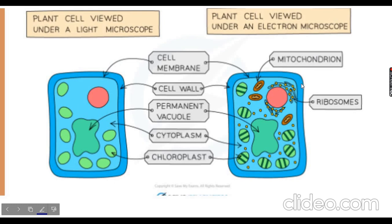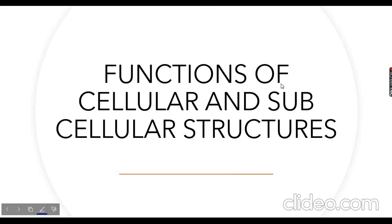For the plant cell, under a light microscope at lower magnification you will see the cell wall, cell membrane, nucleus, chloroplasts, and vacuole. Under an electron microscope you will see further contents: mitochondria and ribosomes. The mitochondria and ribosomes can only be seen at higher magnification.